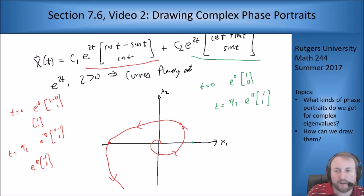And then as time goes on, we end up at e to the pi times (1, 1), so we end up sort of up here. And we're going way out this way. And again, as time goes backwards, we're going to sort of funnel in here like this.